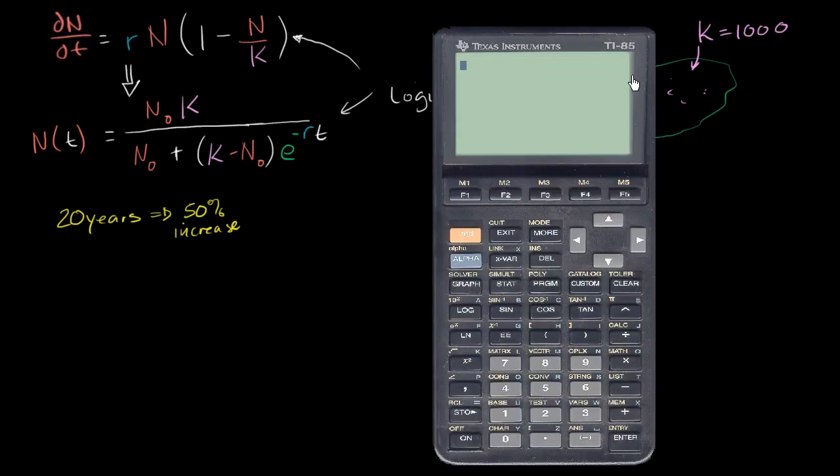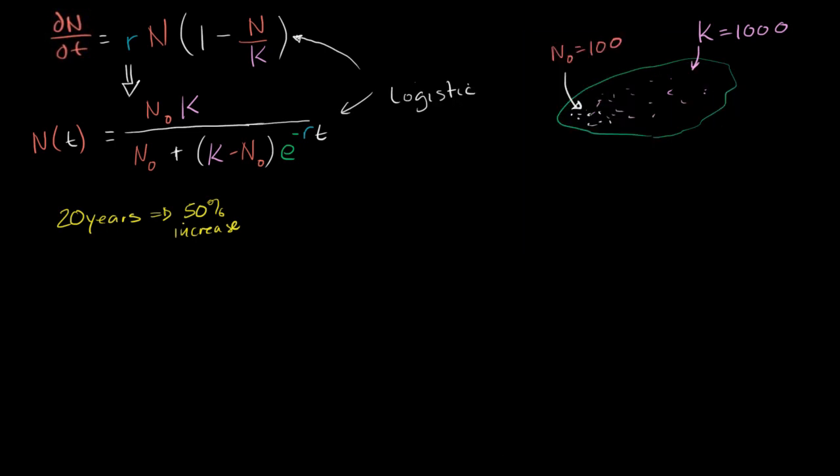Well, to think about that, I'll get out my calculator. Growing by 50% means that you are at 1.5 your original population. And if I take that to the 1/20th power, this tells me that I'm going to grow by a factor of 1.02 every year, 1.02048.